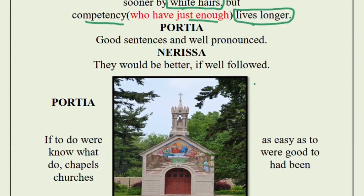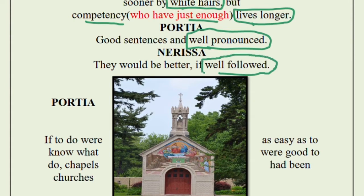Portia recognizes that Nerissa is quite a clever and wise lady. She says these are 'good sentences and well pronounced,' meaning the advice is obviously very nice. It is always very easy for a teacher to advise students to prepare lessons every day and practice English and Mathematics, but it is very difficult to follow that advice. Nerissa agrees: if those good advices are well followed, it would obviously be better.